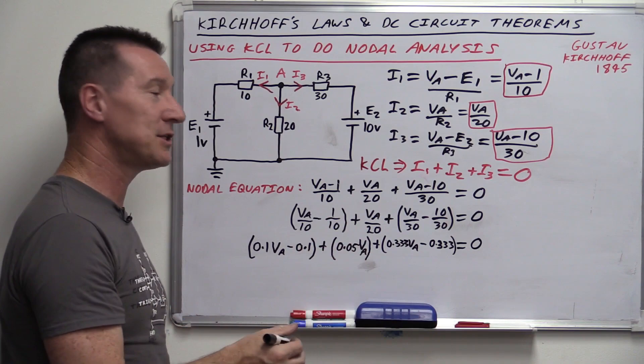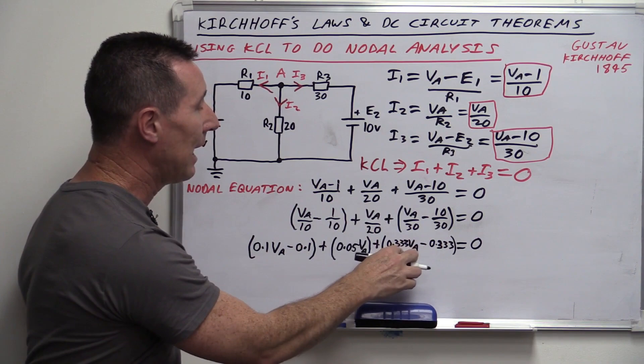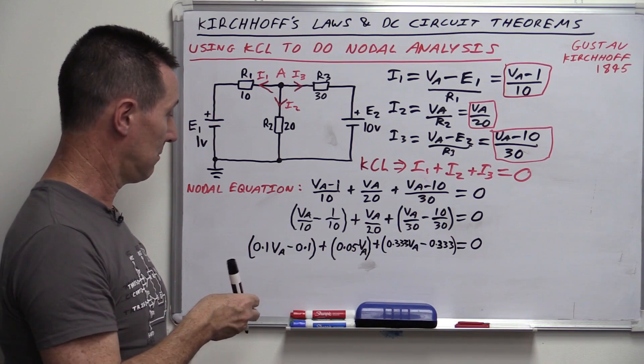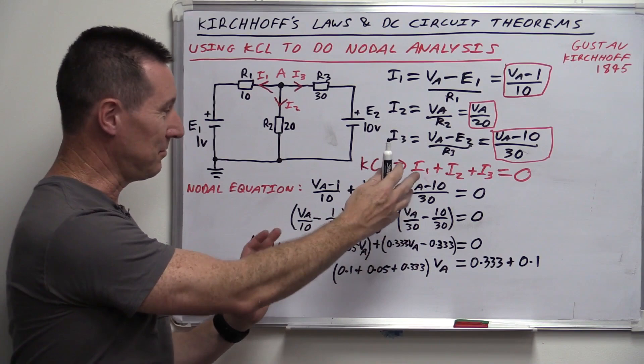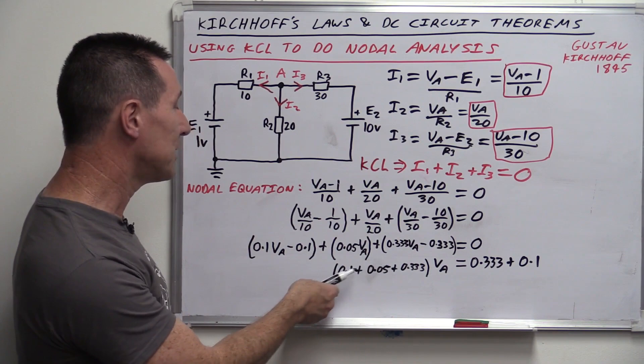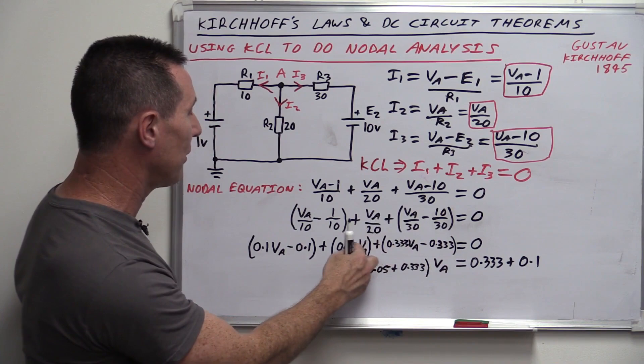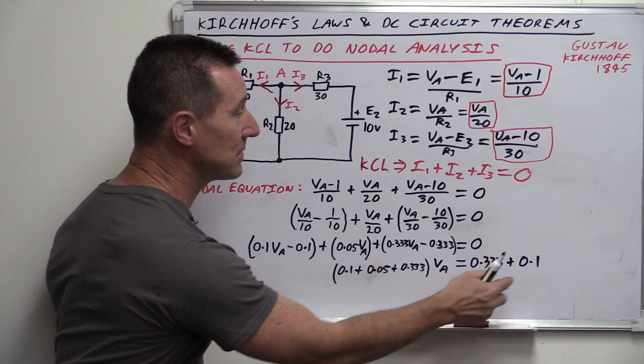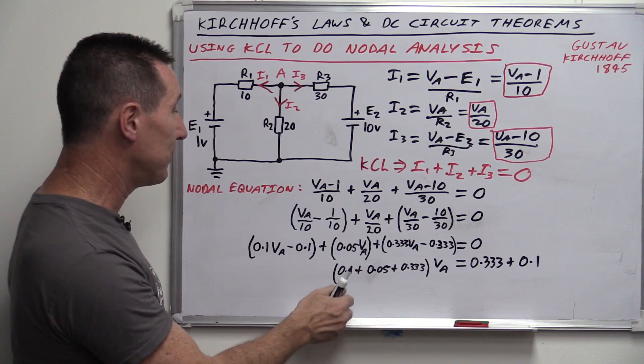Mesh analysis is sometimes known as loop analysis. Kirchhoff's voltage law states: the algebraic sum of the voltages around a closed loop must equal zero. Our current directions are arbitrary, but by convention in mesh analysis you use clockwise current flow — conventional current flow, not electron flow. This is the magic part: we've assumed clockwise current direction, but it could actually be flowing the other way. If we've assumed the wrong direction, it'll come out as a negative answer at the end — which actually tells us something about our circuit.